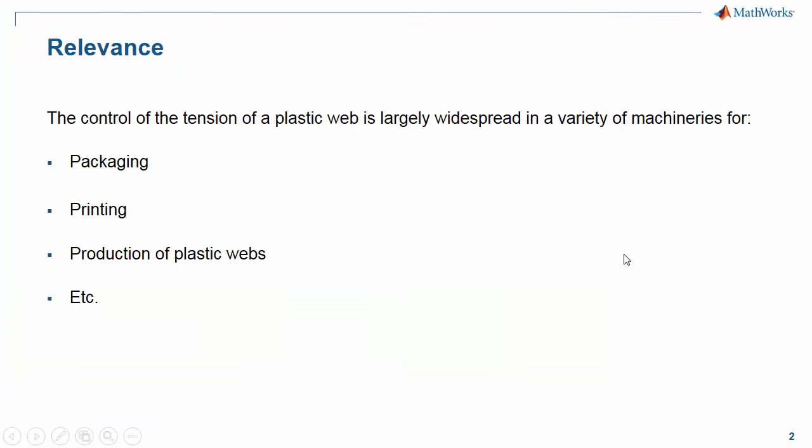Let's start speaking about this application and move into the design process progressively. The control of tension for a web is a common application, very widespread in several industries. You can see some relevant examples here. In general, there is always a big roll of some material which is deployed along the production line to produce packages or to print textures on.